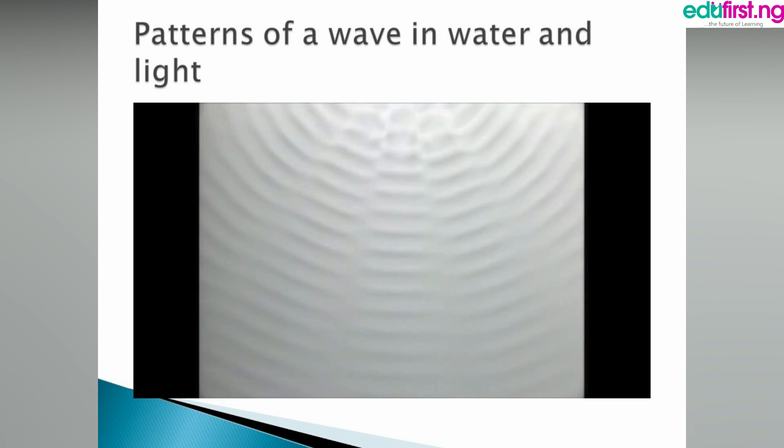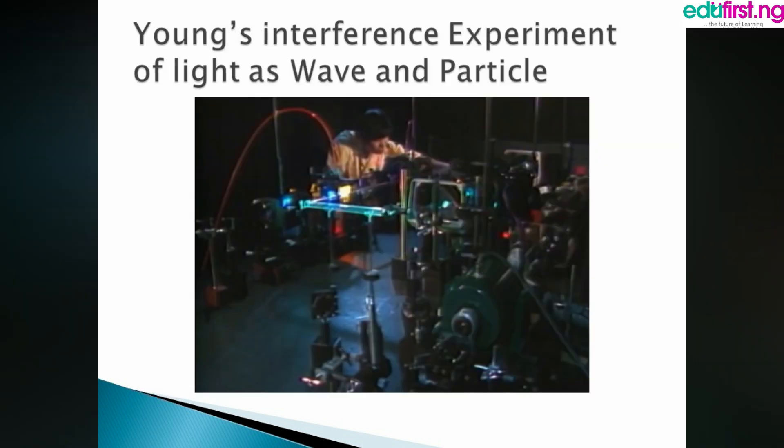How can that also be a particle? We know that particles are the smallest, tiniest atoms that form matter — everything we see in the world. But we're seeing that what appears as a wave can also be seen as a particle.